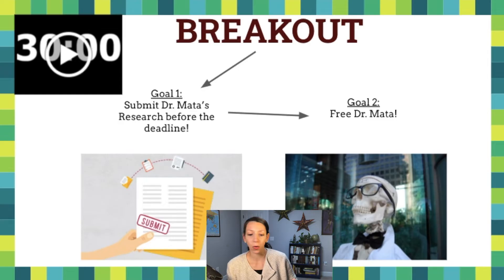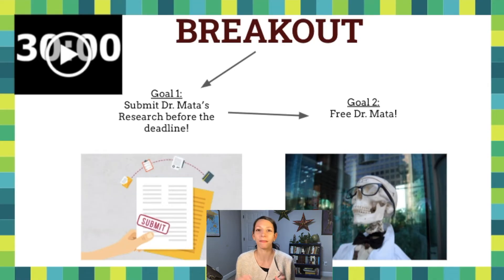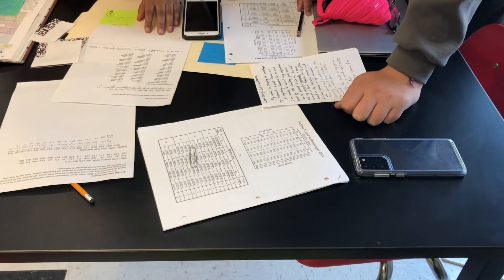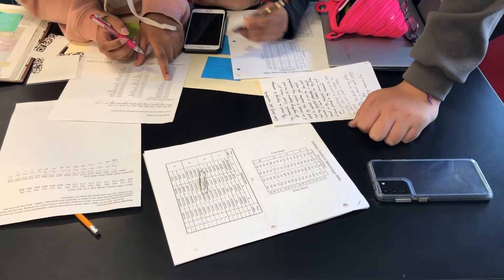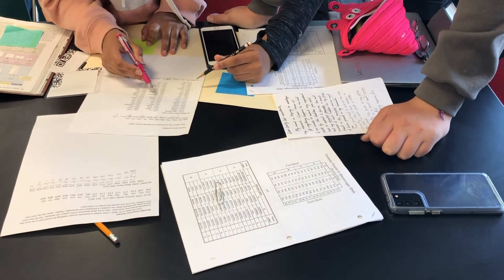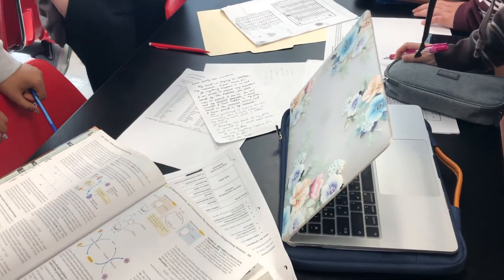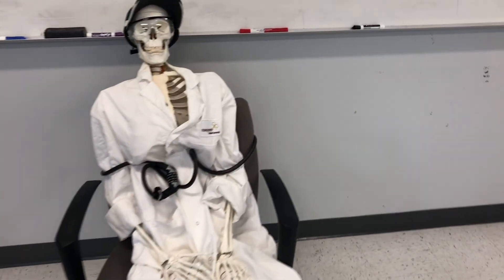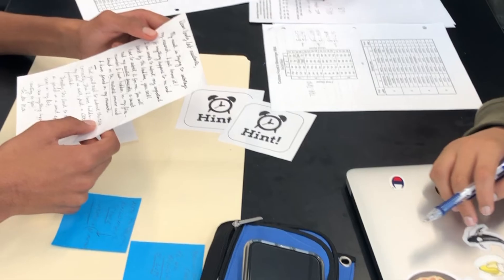I give the students the files, remind them of their goals — to submit Dr. Mata's research before the deadline and to free Dr. Mata — and then I set the timer. I usually put escape room music or an Amazing Race soundtrack on in the background. This helps build anticipation and gets students talking to each other. Students work hard together trying to solve the puzzles even though they aren't sure which order to go in. Groups of four or five are ideal — any fewer and it becomes a lot of work; any more and some students have nothing to do.